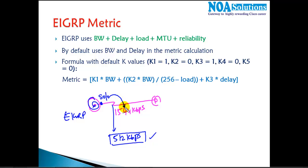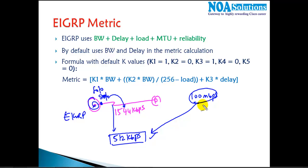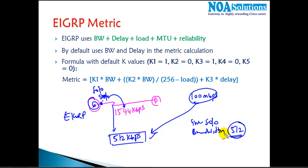If EIGRP sees the default 100 Mbps on an interface but you're only getting 512 kbps from your provider, the metric calculation will be inaccurate. We need to ensure the bandwidth on the interface is changed to match what the provider gives — in this case, 512 kbps on s0/0. This is generally only required when running dynamic routing protocols on WAN links.